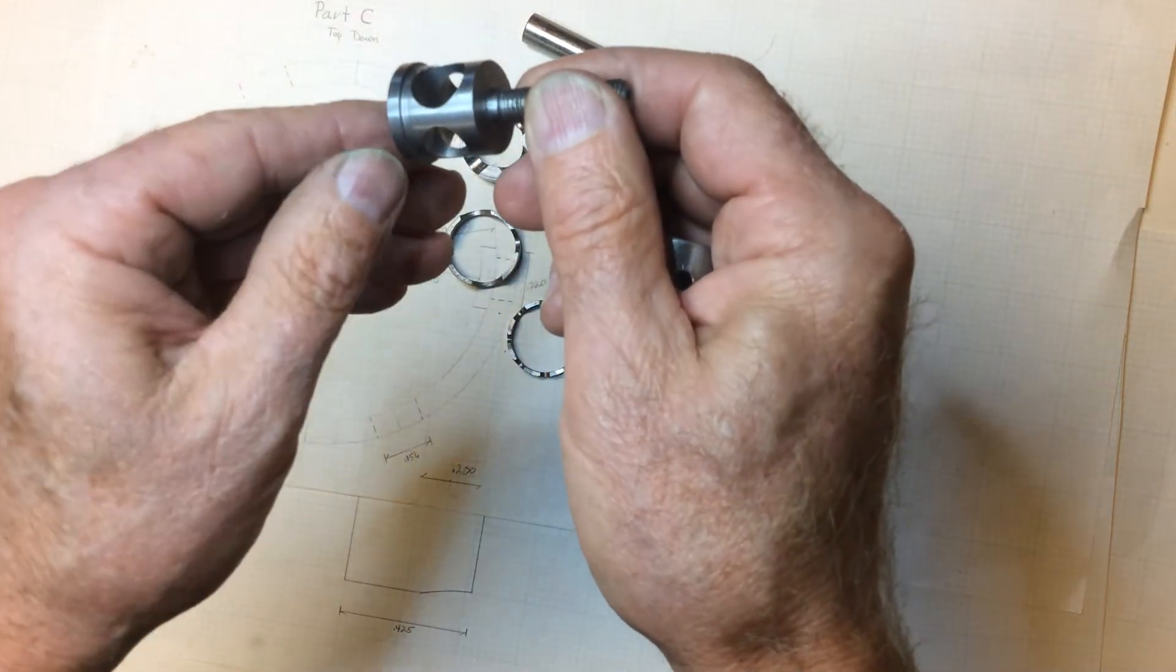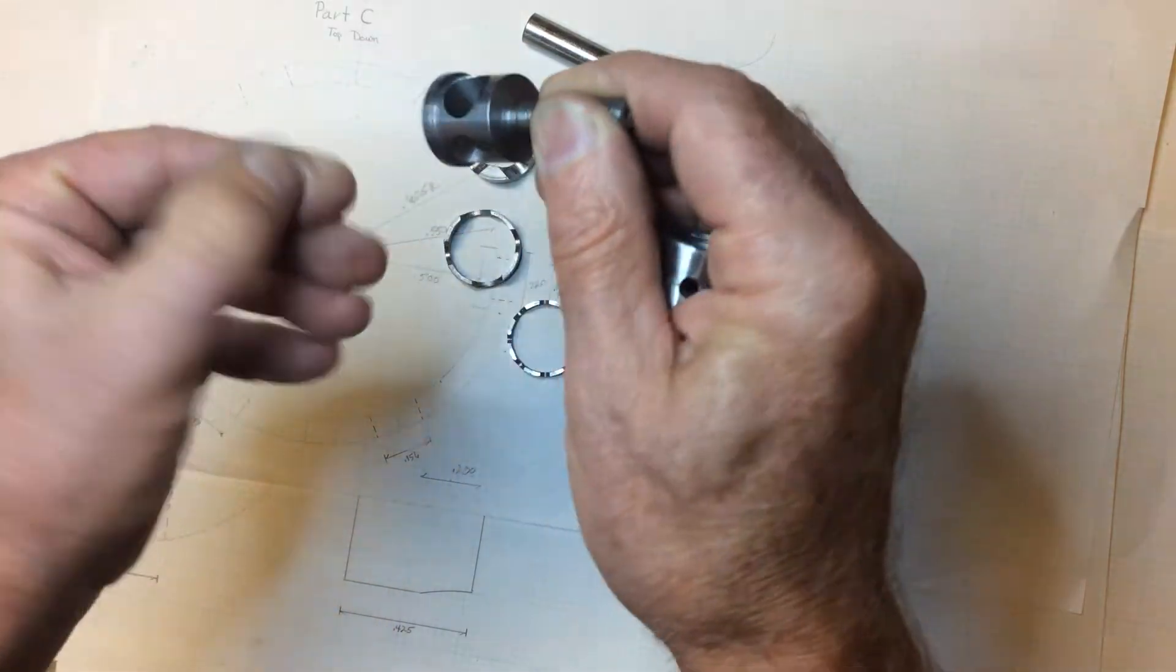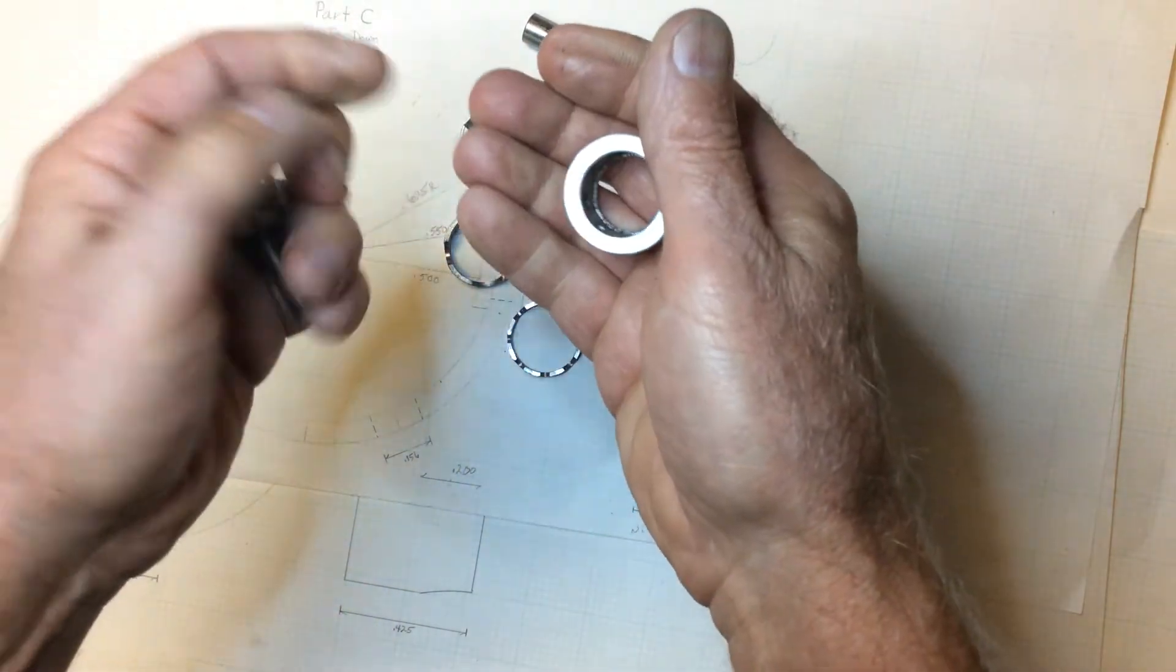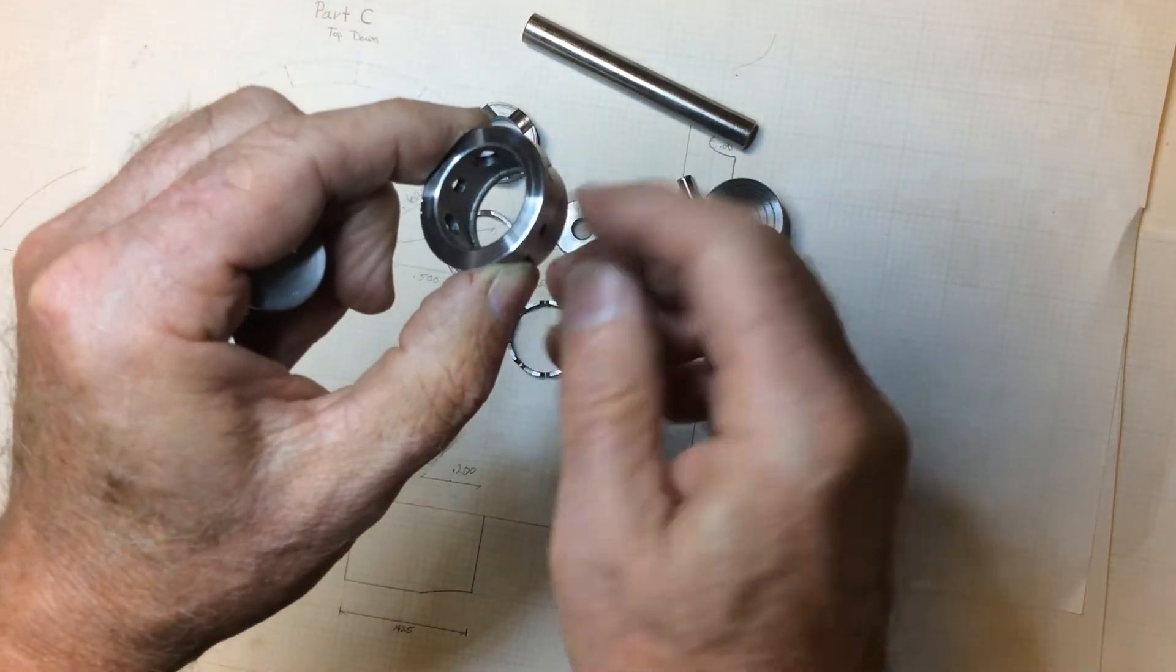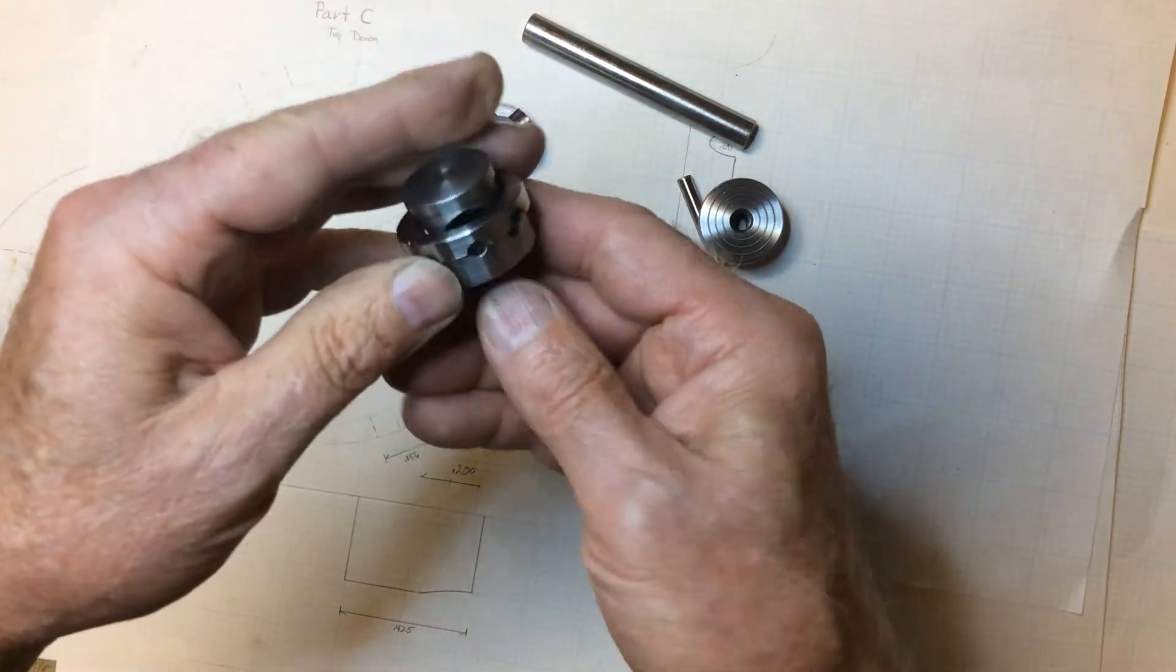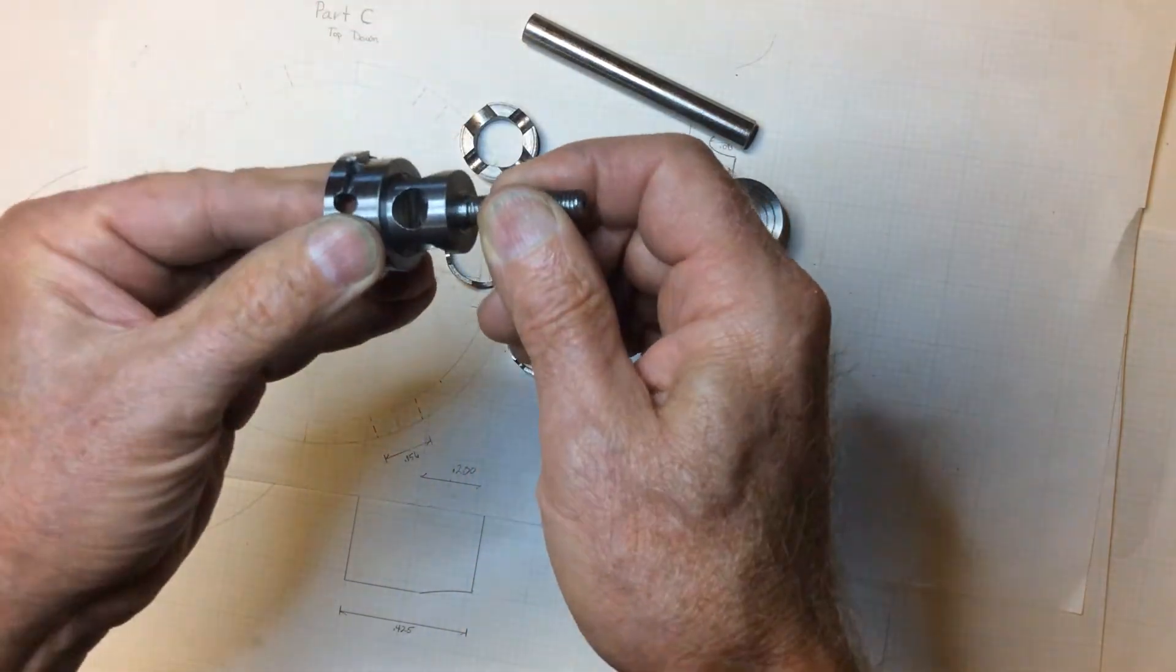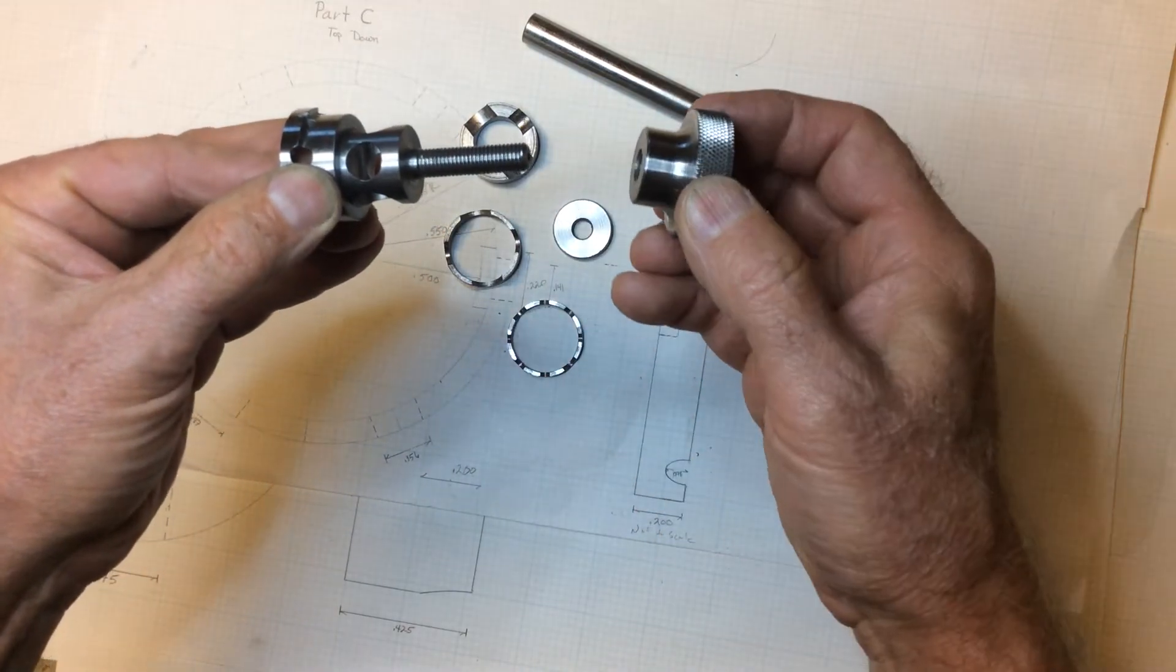And notice that the center portion here has this little step-off, this little lip on it, that catches inside this donut on this ring right here. And that's what pulls that whole stack together as you cinch down on the nut.